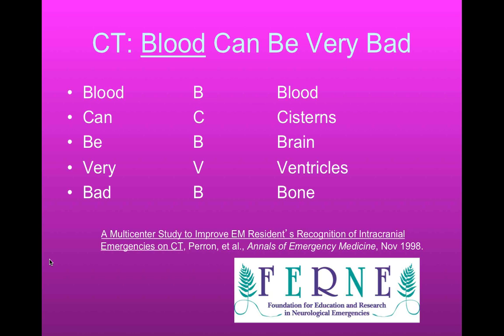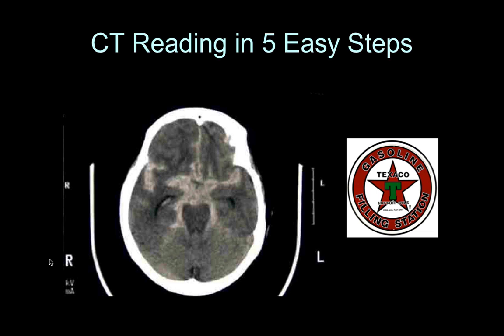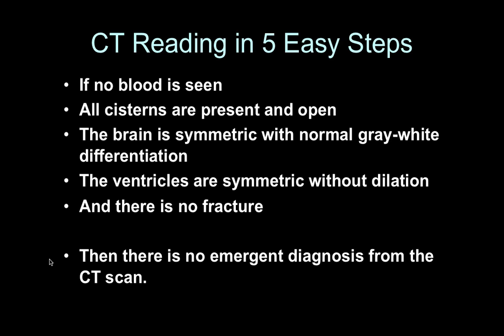So there we covered it — Blood Can Be Very Bad: blood, cisterns, brain, ventricles, and bone. Last quiz — subarachnoid hemorrhage: blood in the supracellar cistern, the circumesencephalic cistern, and the sylvian fissures. The blood's spread out all over the place. So if you're looking at your own CT scan and there's no blood, the cisterns are all open and patent, the brain is symmetrical with no bright white spots, the ventricles are wide open with no dilation, and there are no fractures — then you can say it's a normal CT scan, sleep soundly, and your patient can be reassured.